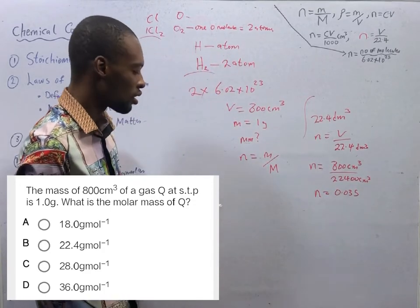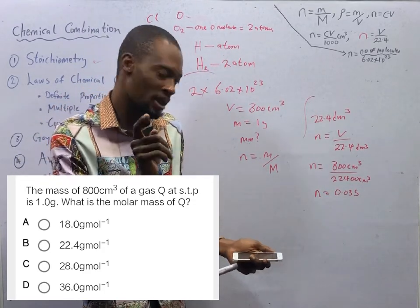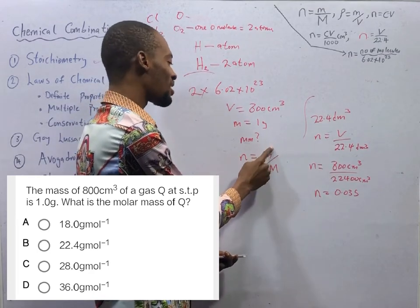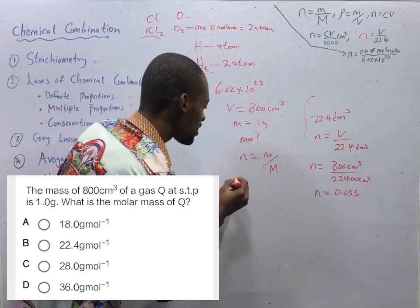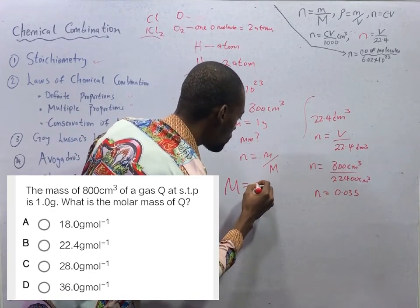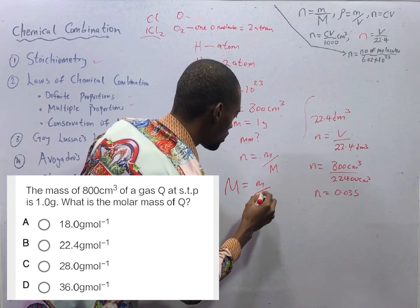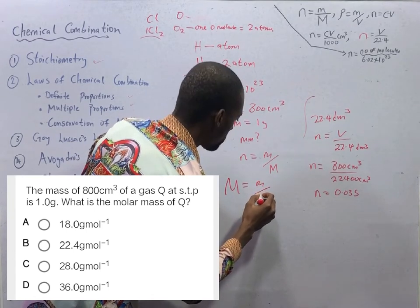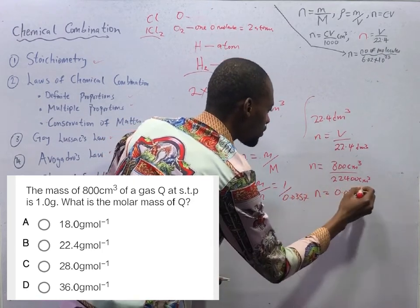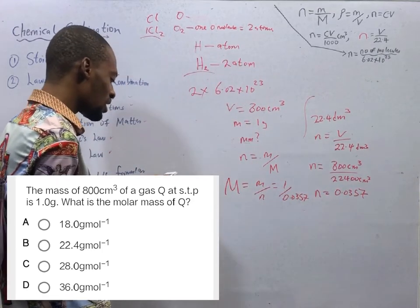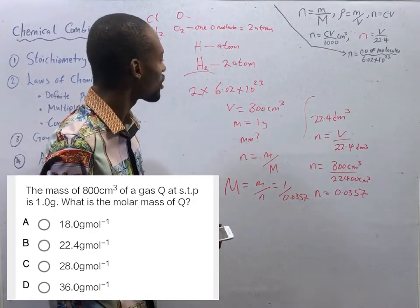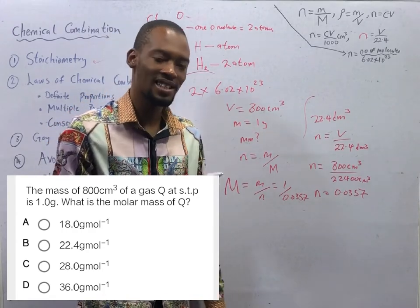Why did we look for number of moles? We are asked to look for molar mass. And number of moles is mass over molar mass. We have mass. Now we have number of moles. Molar mass is therefore equals mass over number of moles. That is 1 over 0.0357. So that will give you 28.0 grams per mole. This is the molar mass of the substance or of the gas, Q.